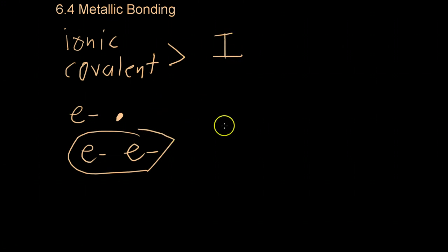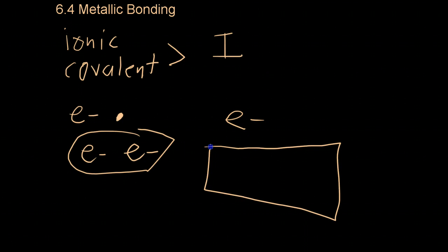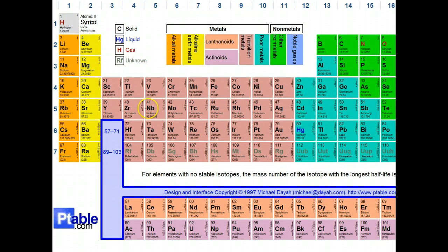However, in metals, electrons can flow freely across a whole sheet of metal several meters across. So, to explain this behavior, we of course have to look to the periodic table.